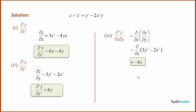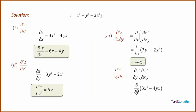Now we differentiate dz/dx with respect to y. dz/dx is 3x squared minus 4yx, and we differentiate this with respect to y keeping x constant. Differentiating 3x squared gives 0 because it is considered a constant, and differentiating minus 4yx gives minus 4x. So as we can see, d²z/dx·dy is equal to d²z/dy·dx.